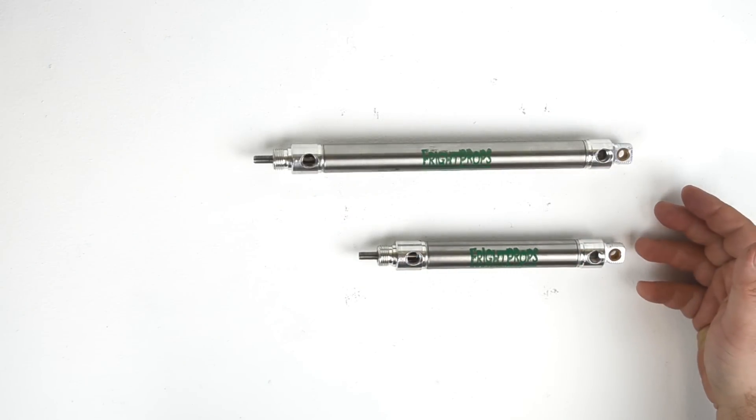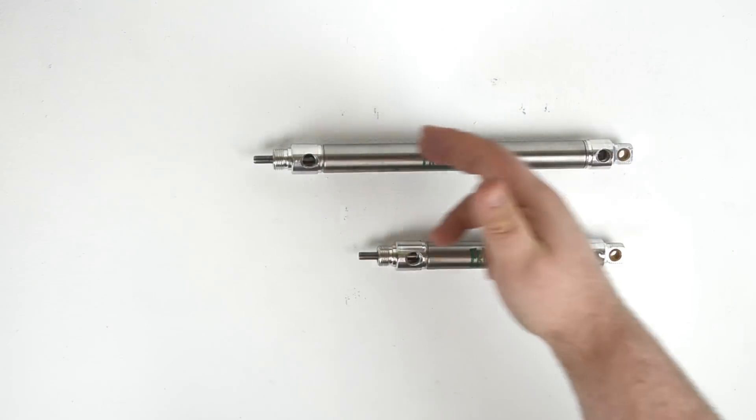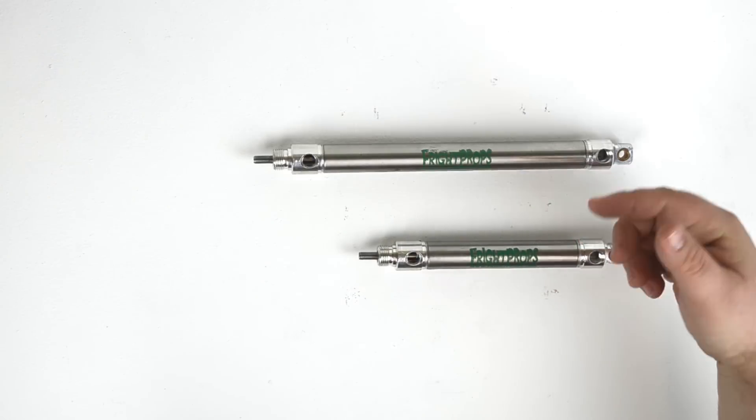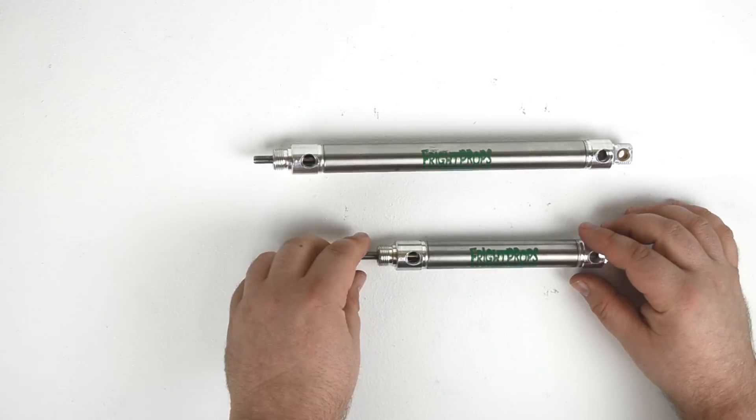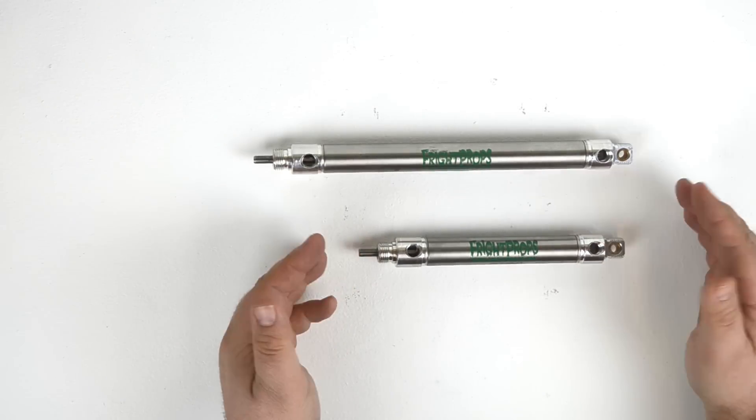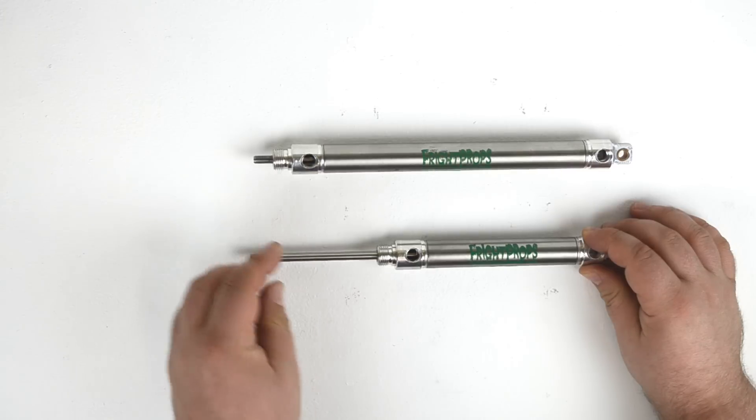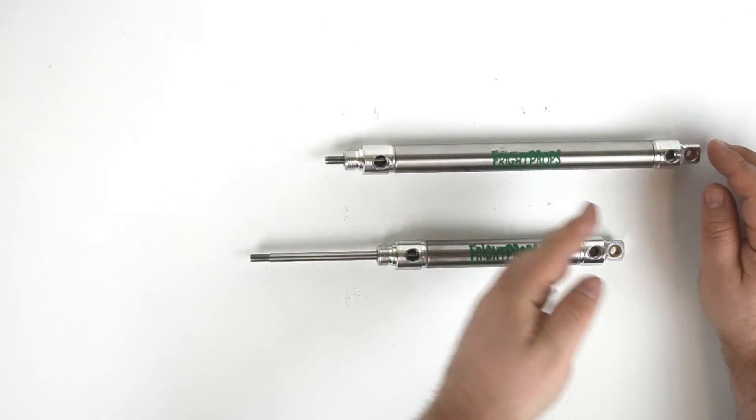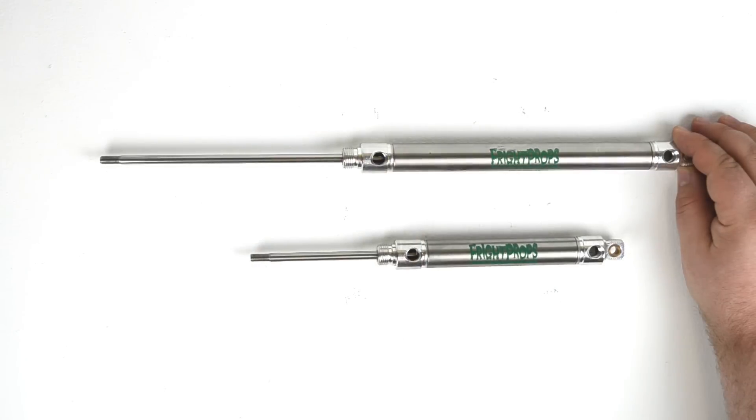As the stroke of a cylinder increases, so does the overall length of the cylinder. These two cylinders are both three quarter inch bore cylinders, but the bottom one here is a three inch stroke, whereas the top one here is a six inch stroke. That means that the bottom one is shorter overall, but the rod only extends three inches. The top cylinder is longer, but the rod will extend twice as far.